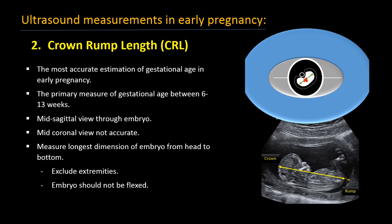As soon as the embryo can be seen, gestational age can be estimated by measuring the crown rump length. A correctly performed crown rump length measurement is the most accurate estimation of gestational age in early pregnancy; however, it can also be the most difficult measurement to obtain. Crown rump length is the primary measure of gestational age between 6 to 13 weeks. To obtain it correctly: first, obtain a mid-sagittal view through the embryo; then ensure the embryo or fetus is not flexed; measure the longest dimension from head to bottom, excluding the extremities. Any degree of flexion will produce underestimation of the crown rump length when linear calipers are used.